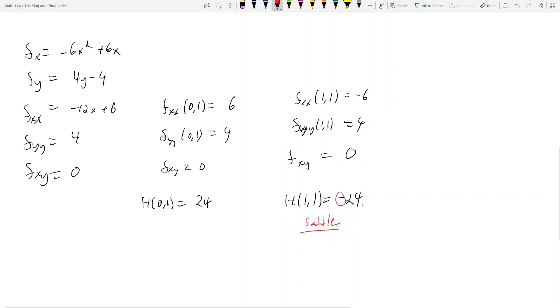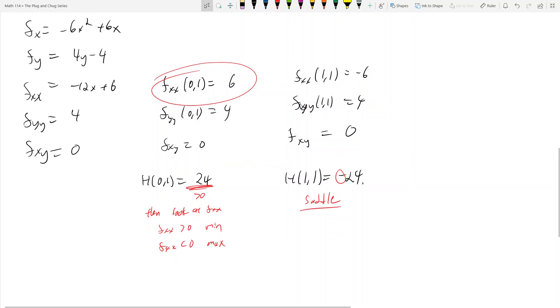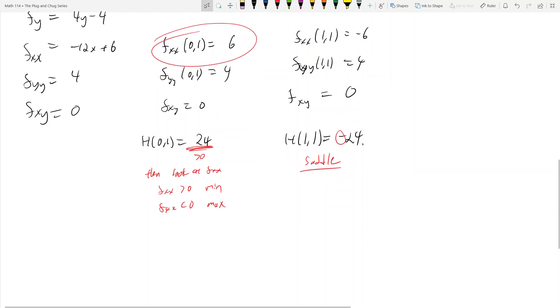Now what? This guy's positive. So what's the next step? The next step is to see what f sub xx is. And if this is greater than 0, then look at f sub xx. If f sub xx is greater than 0, you've got a minimum. And if f sub xx is less than 0, you've got a local maximum. Since f sub xx is a positive 6, we see that we get a local min here.